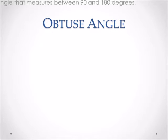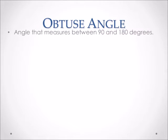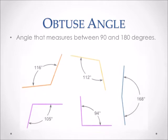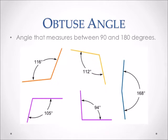Obtuse angles are angles that measure between 90 and 180 degrees. For example, 116 degrees, 112 degrees, 105 degrees, 94 degrees, and 168 degrees.